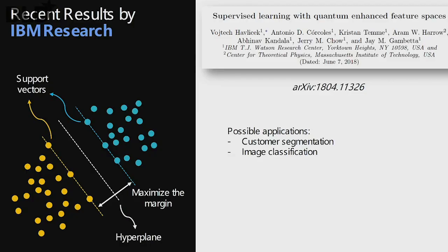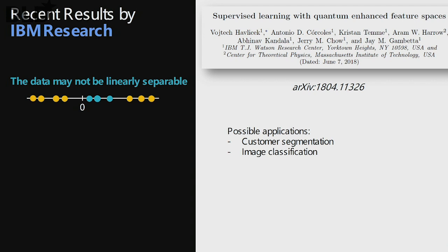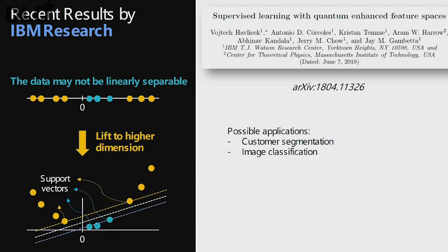Another problem class is classification for machine learning. You want to classify two data sets — important for applications like customer segmentation or image classification. The idea is to separate yellow dots and blue dots by finding boundaries between them. When the data is linearly separable, this is easy. However, often data may not be linearly separable. Using quantum mechanics you can map the data into a higher-dimensional space and then successfully separate the two classes. These examples show how the power of quantum computers can be used for such problems.